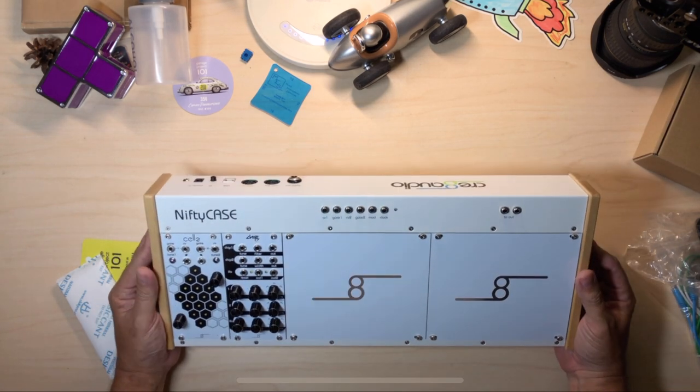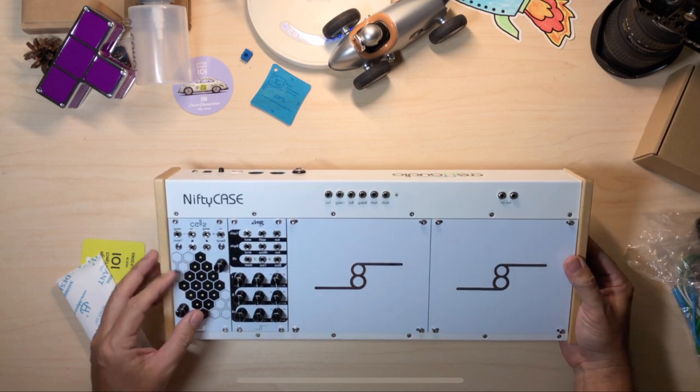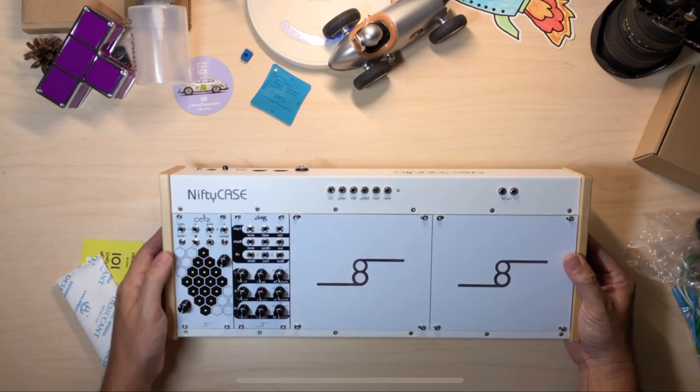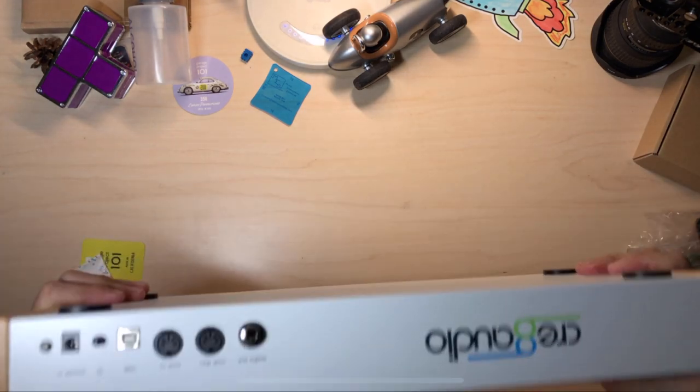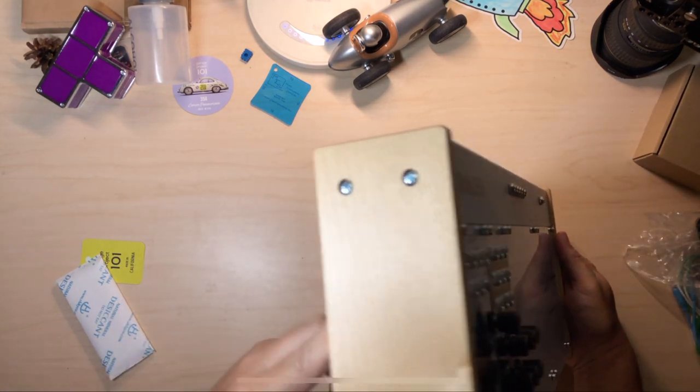But you know what? The case is well-made and well-appointed. It's got wood. The bundle includes the nifty case, a few patch cables to get started, two blind plates, and last but not least, two basic but capable modules.